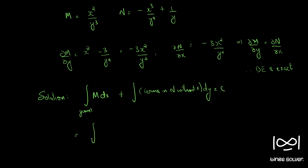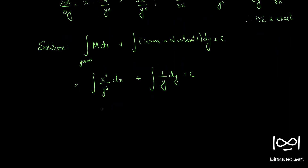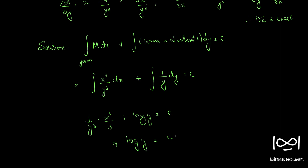So we have integral of x squared over y cubed dx plus integral of the term in N without x, which is 1 over y, dy equal to c. Since y is considered a constant, we get 1 over y cubed times x cubed over 3 plus log y equal to c. Or we can write x cubed over 3y cubed plus log y equal to c.